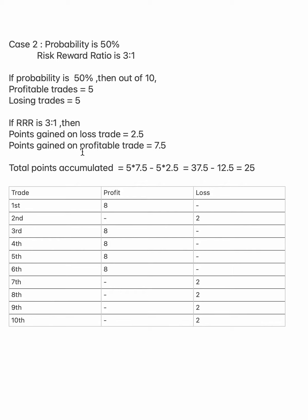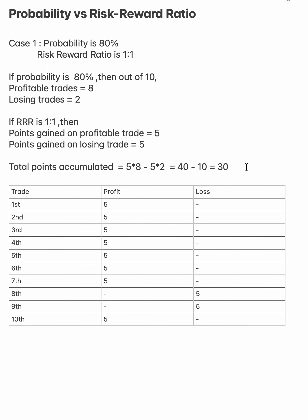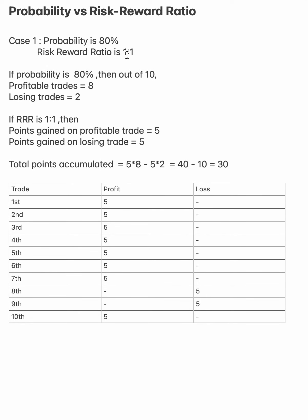We have more points gained for the profitable trades and less points lost for the losing trades. The total points for the profitable trades is 5 into 7.5 minus losing which is 5 into 2.5. So here you can see the total points accumulated is 25.